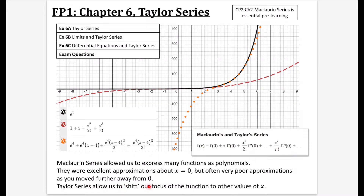Taylor series allow us to shift our focus to other values of x. This Taylor series is still approximating e to the power of x, but instead of focusing around zero, we're focusing it around four. Around x equals four, the orange dots are really close to the black line, and the further you go from four, the worse the approximation gets. This lets us make non-polynomial functions behave like polynomials near any chosen point.